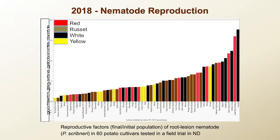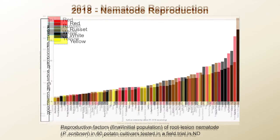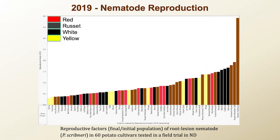From the first year of experiment, we found nematodes had very good reproduction overall. Almost every cultivar allowed the nematode to reproduce. But in the second year, the reproduction rate was pretty low, and most cultivars did not support nematode reproduction.